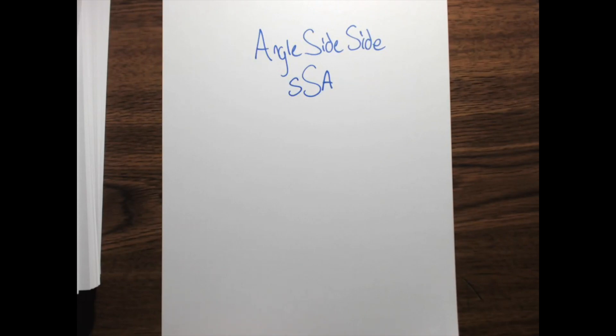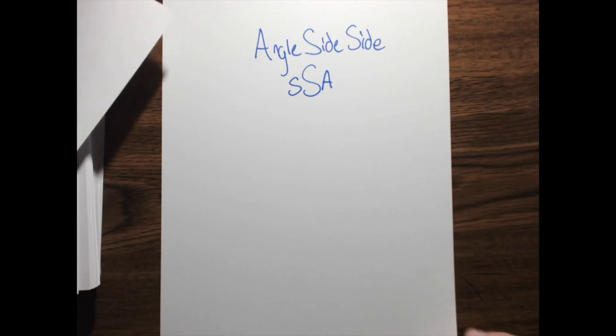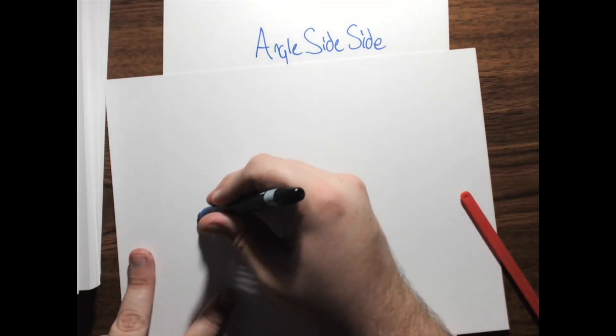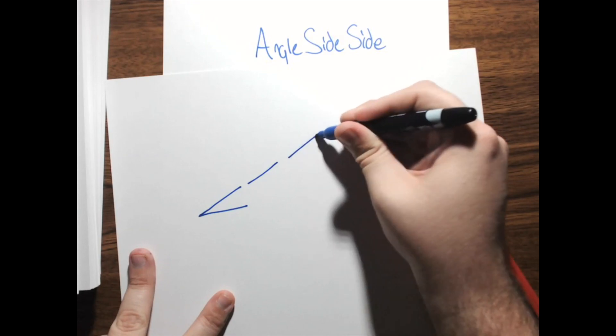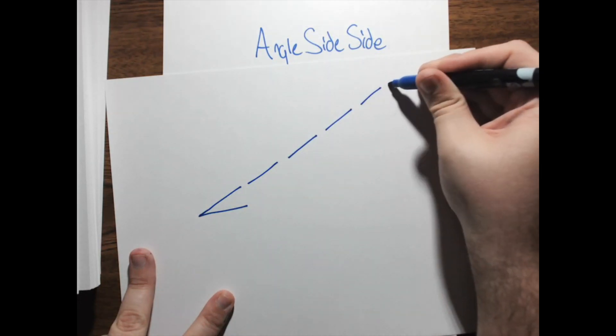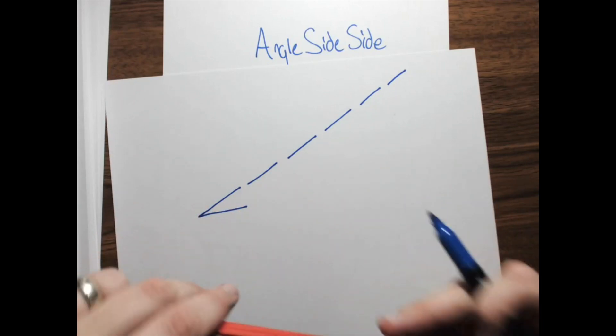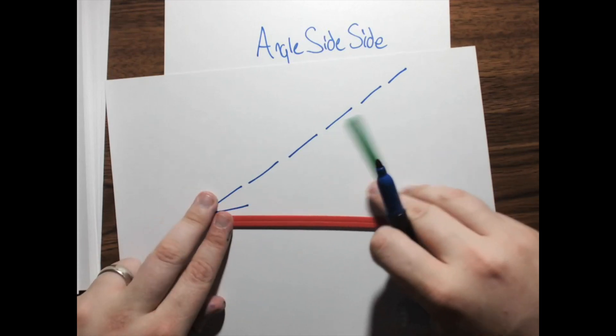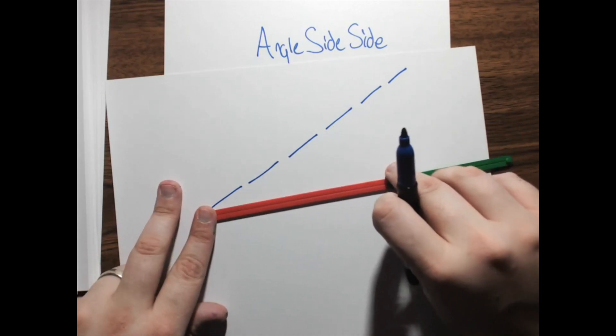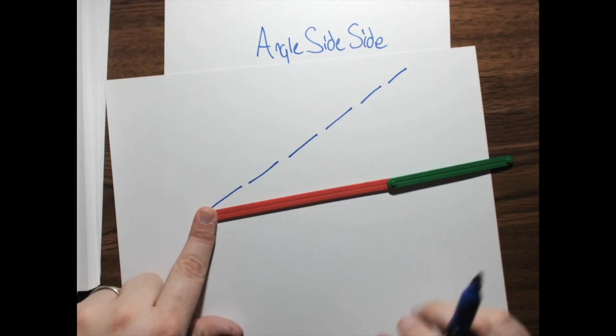But, the reason that it doesn't work isn't that. To show you the reason why, I'm going to take out another sheet of paper. And, we'll come back to this. So, what I'm going to do, is I'm going to create an angle. Now, I have this special set of lines. One is red, and one is green. What I'm going to do first, is I'm going to set up my red line right here.